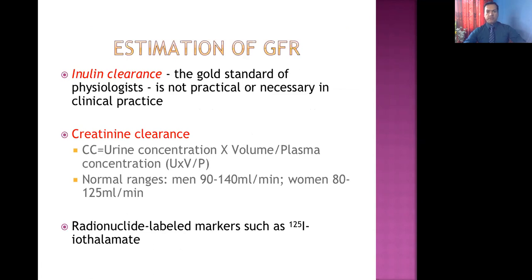How to estimate GFR in clinical practice — just know the headings here. First is inulin clearance, considered the gold standard for physiologists but not very practicable in clinical medicine. Second is creatinine clearance, calculated as urine concentration multiplied by volume of urine divided by plasma concentration. The normal range in males is 90 to 140 ml per minute; in females, 80 to 125 ml per minute.